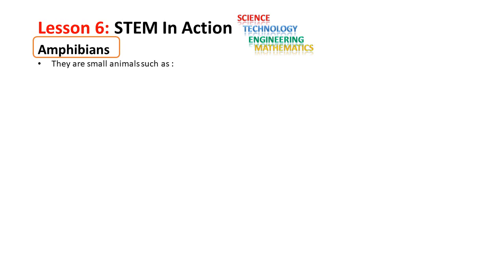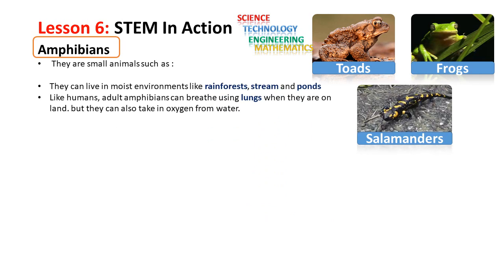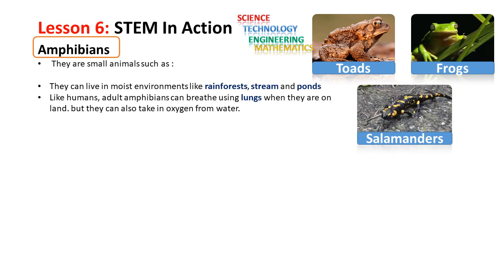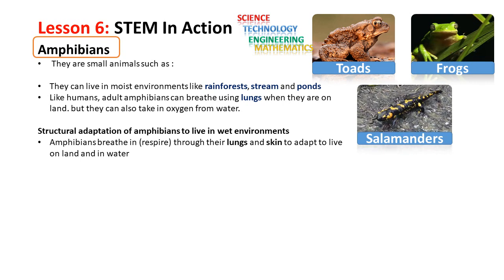Back to the lesson — we are going to talk about amphibians. When we classified animals into groups, we said we have mammals, birds, fish, reptiles and amphibians. Amphibians are small animals such as frogs, toads and salamanders. They can live in moist environments like rainforests, streams and ponds. Like humans, adult amphibians can breathe using lungs when they are on land, but they can also take in oxygen from water.